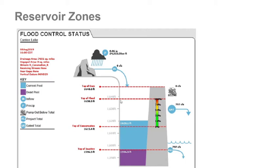I go into the different zones in a reservoir in other videos so we won't spend a lot of time with it, but here you have your inactive zone, your conservation zone, your flood zone, and then above your flood zone you have your surcharge zone. We're going to be dealing with the flood zone — how water is treated in that zone under these different methods — and also what type of impacts to the downstream area we can see based on these different methods.